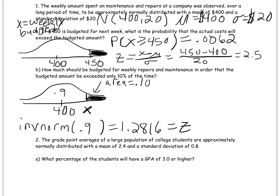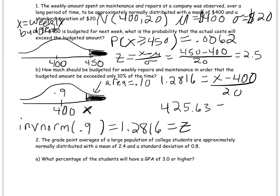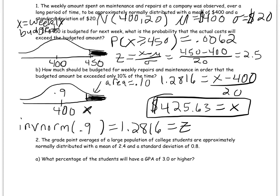Using the Z-score formula: Z = (X − μ) / σ, so 1.2816 = (X − 400) / 20. Multiply both sides by 20, then add 400 to both sides, and I get X = $425.63. So if I set the weekly budget at $425.63, I would only go over that budget 10% of the time — something anyone can understand even without training in statistics.